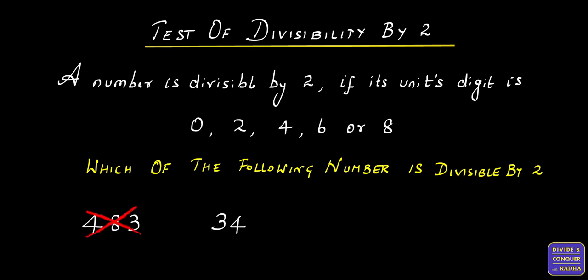Next number, 34. The number in the unit's digit is 4, so the given number is divisible by 2.